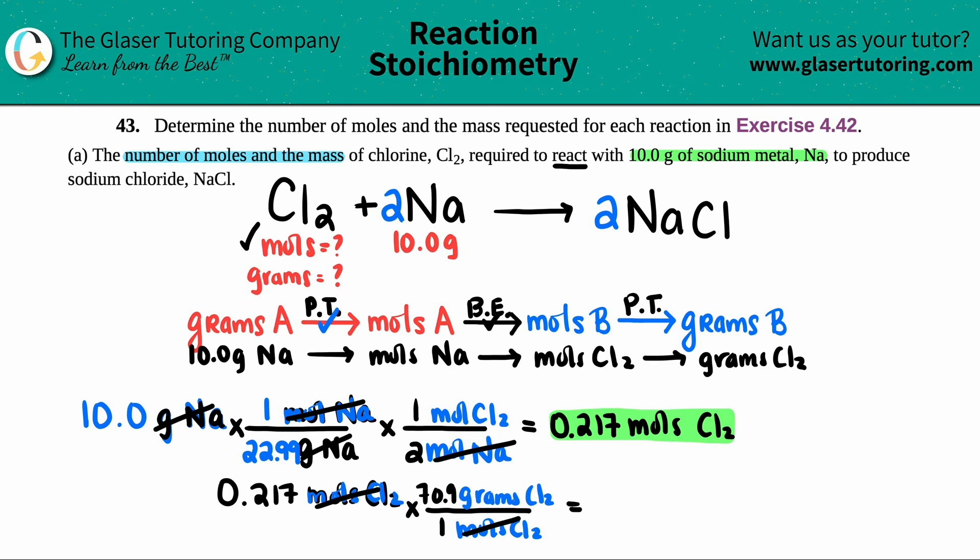And now let's just do the math. So 0.217 times 70.9, rounding to three sig figs again. So 15.4. And that's grams of Cl2. And those are your two answers.